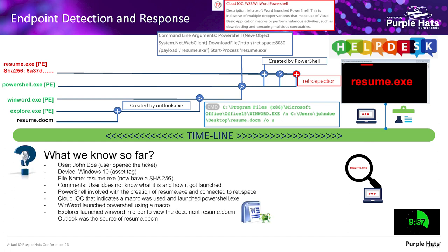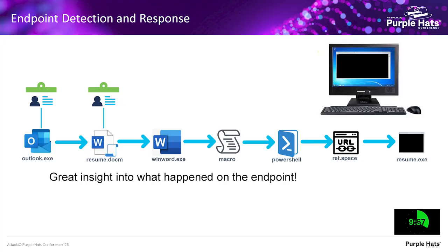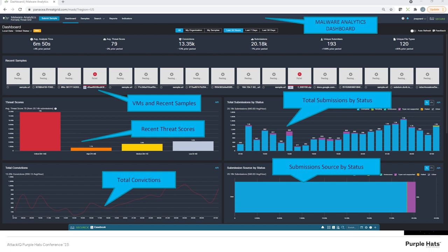We need to understand where resume.docm came from. Looking at the relationship of the application that was the problem child in all of this, we see it's outlook.exe. For the endpoint, that's it — that's all we can do on the endpoint detection response side. We know John Doe used Outlook, double-clicked resume.docm, WinWord launched, macro was enabled, PowerShell went to ret.space and downloaded and started resume.exe. Great insight on the endpoint — but let's expand this.